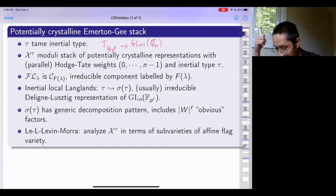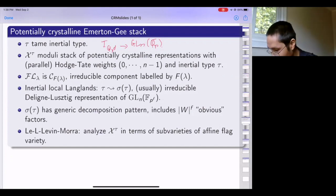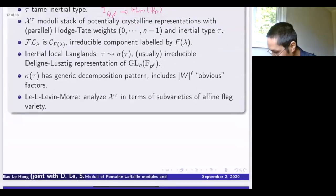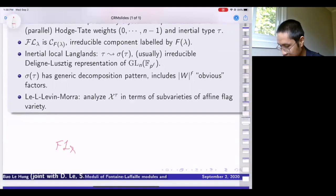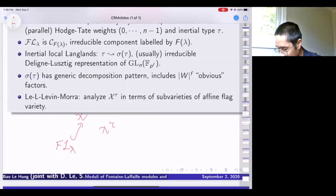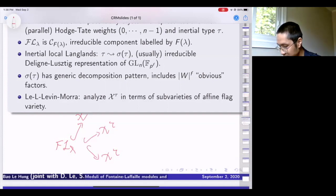In the language of the Emerton-Gee stack, this moduli of Fontaine-Laffaille modules is nothing but an irreducible component in this stack—what Toby called the component labeled by lambda. The picture to keep in mind is that I have FL_lambda sitting as an irreducible component in the special fiber of the Emerton-Gee stack. Inside here, for any tame type, there are all these potentially crystalline sub-stacks. There's a simple way to detect which chi_tau contains this particular component FL_lambda.